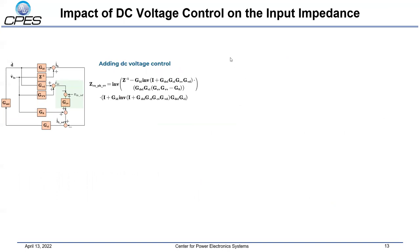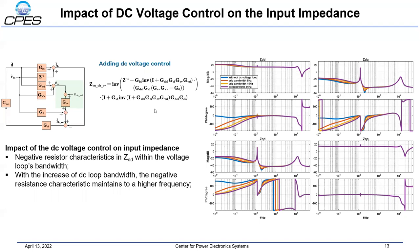After including the DC voltage control, the block shaded in green is added to the small-signal model, where GCI represents the dynamics of the DC voltage controller. The input impedance can then be calculated using this equation. This figure shows the impedance results for four scenarios: without DC voltage controller, and with different DC voltage control bandwidths of 6 Hz, 15 Hz, and 24 Hz. Adding the DC voltage control mainly impacts ZDD at low frequency, and also ZDQ and ZQD because of the coupling effect. This is because the D axis is aligned with the original circuit input voltage vector, and due to unit power factor control, the AC side power is delivered through the D channel to the DC channel. Having DC voltage control also results in a negative resistor characteristic of the ZDD element at low frequency. With increasing DC loop bandwidth, the negative resistance characteristic extends to a higher frequency.